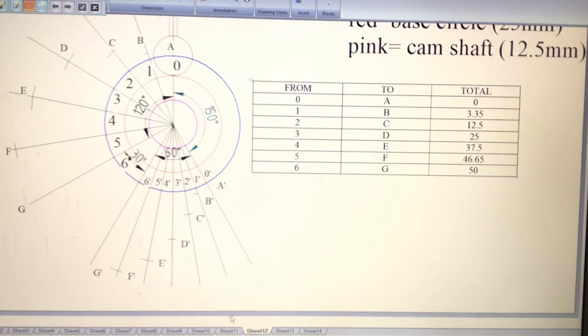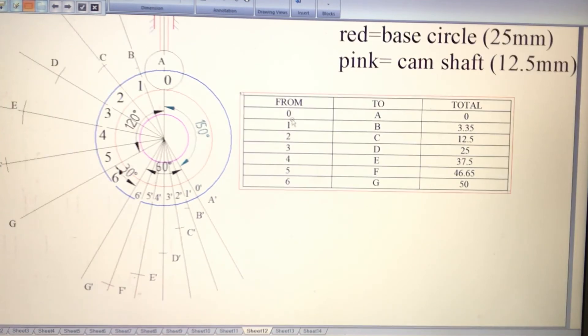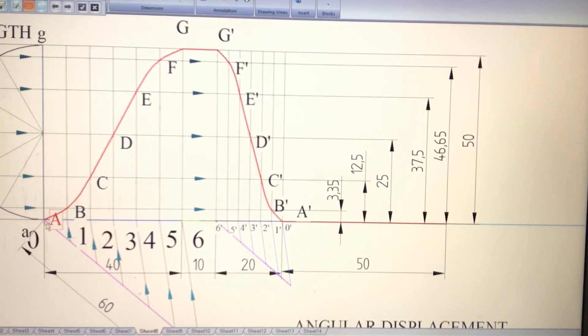In the next step, we measure distances: 0 to A equals 0, 1 to B equals 3.35 from the displacement drawing. See here, 0 to A is 0, 1 to B is 3.35. It is the same for angle of rise as well as angle of return. Then 2 to C is 12.5.